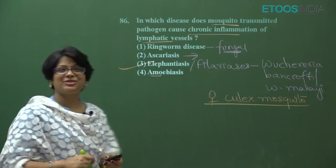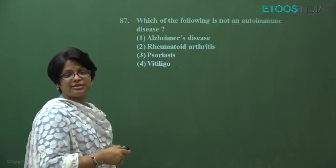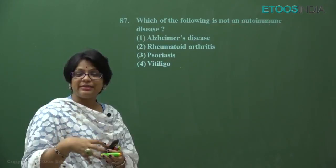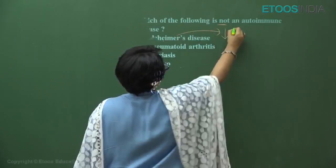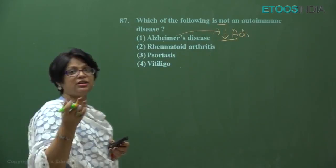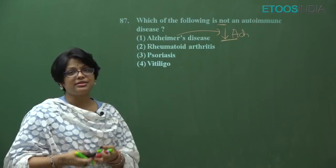The next question, RR code NEET 2018, question number 87: which of the following is not an autoimmune disease? Autoimmune means the body forms antibodies against its own cells. Alzheimer's is caused by decreased acetylcholine, involving progressive dementia and memory loss, and is generally considered due to gene mutation. Rheumatoid arthritis is an autoimmune disease where antibodies are formed against the synovial membrane.